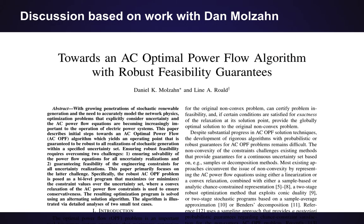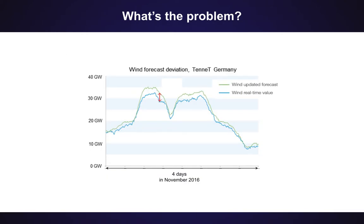This presentation is based on work with Dan Maltan, so if you're interested in knowing more about this you can look for that paper. A lot of work in power systems these days is really motivated by the rise of renewable energy and the uncertainty that comes along with it. Here on this slide is a picture of wind forecasts and real-time wind values during four days in November 2016 in the German transmission system operator TenneT Germany.